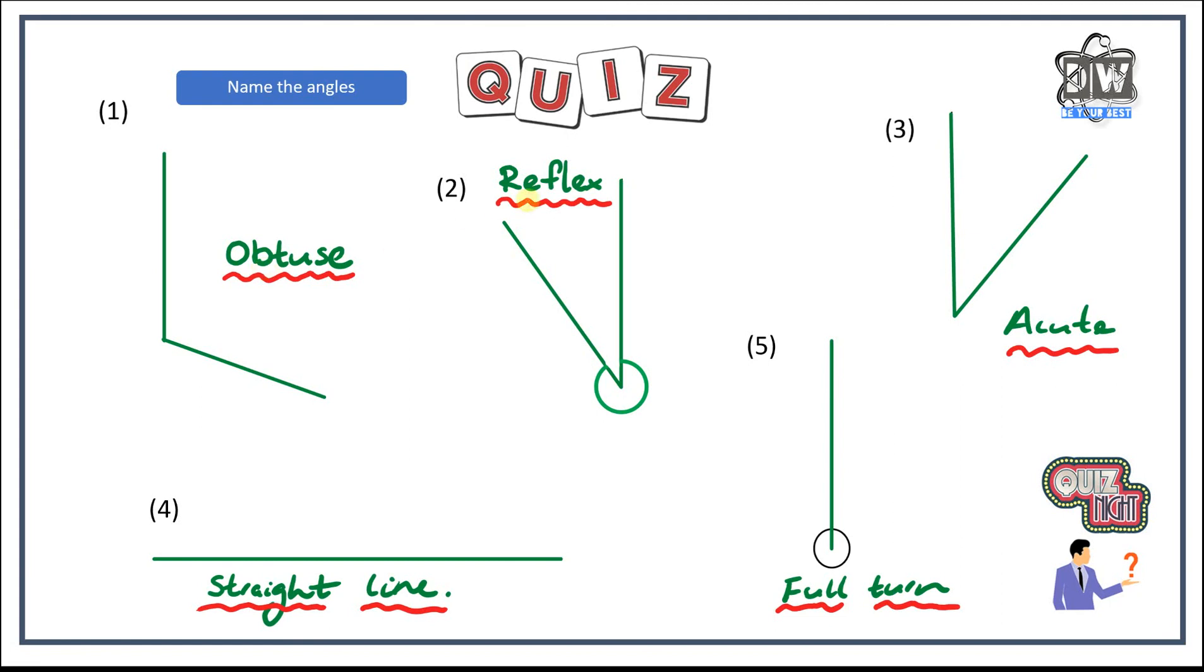So we've got an obtuse for a start. We've got reflex all the way around. Remember, it's more than 180. Obtuse is more than 90 or 90 more. An acute angle, less than 90. A straight line worth 180 and a full turn worth 360. Hopefully you got all of those correct.